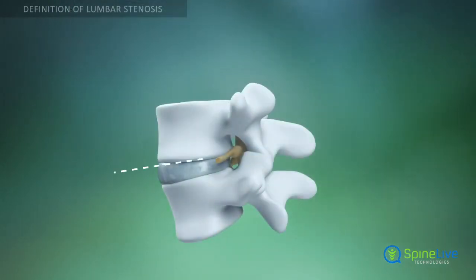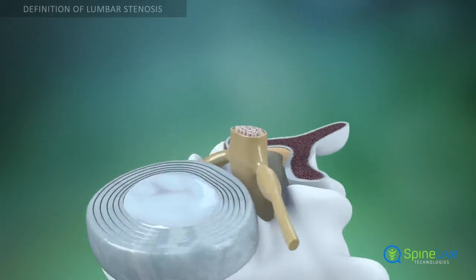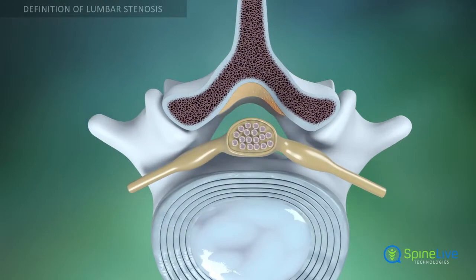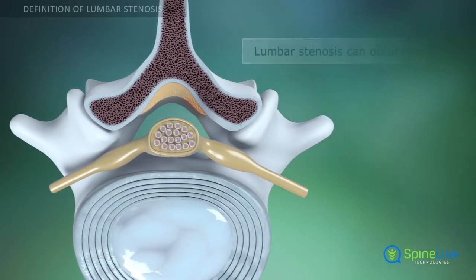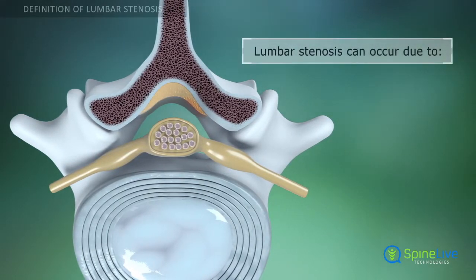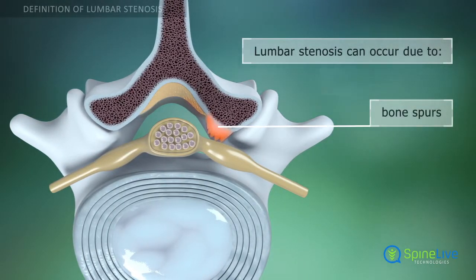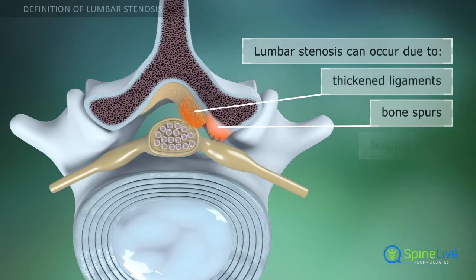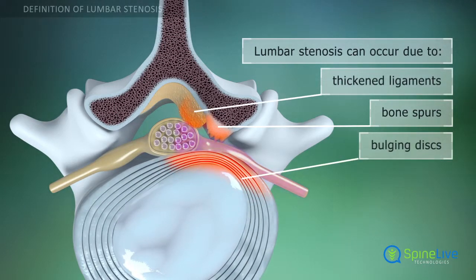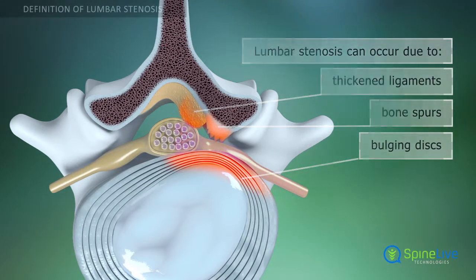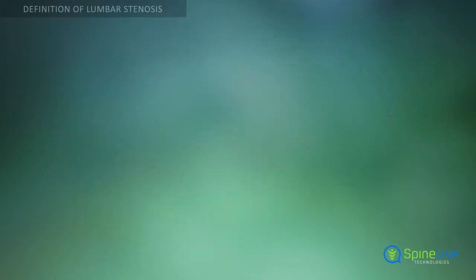Usually, lumbar stenosis occurs with aging, when normal wear and tear causes the loss of cushioning between the spinal vertebrae. Degenerative processes lead to the formation of bone spurs, ligament thickening, or disc bulging. These changes may cause narrowing of the spinal canal or spinal foramina, which crowd the spinal cord and spinal nerves.